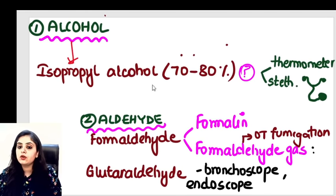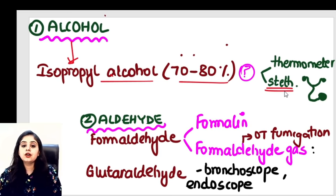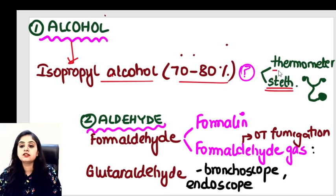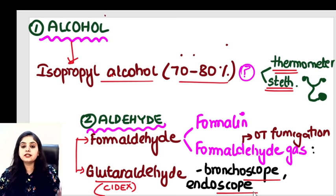The main chemicals to know are alcohols and aldehydes. Isopropyl alcohol at 70–80% concentration is used for stethoscopes and thermometers — items a doctor might carry from the hospital back home. Under aldehydes, we have two types: glutaraldehyde and formaldehyde. Glutaraldehyde (Cidex) is used for all kinds of scopes — bronchoscope, laryngoscope, endoscope, proctoscope, colonoscope.